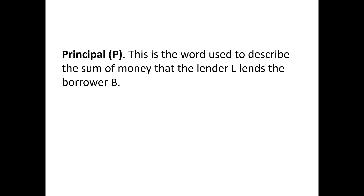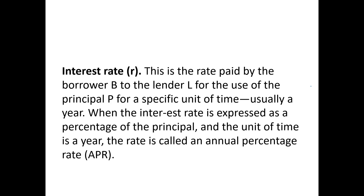Some vocabulary: Principal is the sum of money that the lender lends the borrower. Interest rate is the rate paid by the borrower to the lender for the use of the principal for a specific unit of time, usually a year. When the interest rate is expressed as a percentage of the principal and the unit of time is a year, the rate is called the annual percentage rate — the APR.